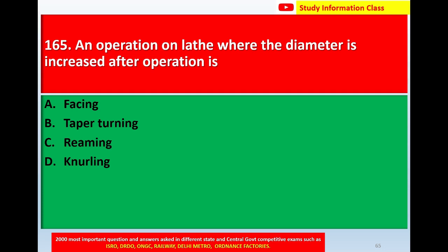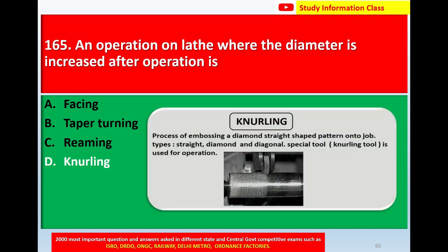Question number 165: Option A thread cutting, option B taper turning, option C reaming, option D knurling. Correct answer is option D, knurling. Knurling is the process of embossing a diamond or straight shape and pattern onto a job. A special tool called a knurling tool is used for this operation. When an operation on the lathe increases the diameter after the operation, it is called knurling.